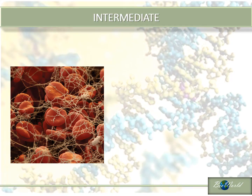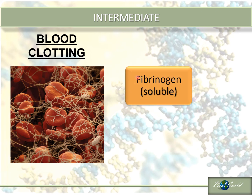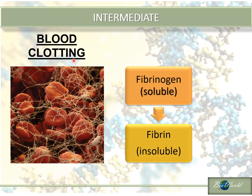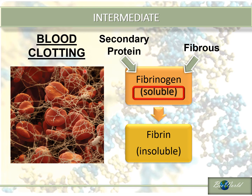The third group is intermediate proteins. Intermediate proteins can be found in the blood clotting process. It involves a protein called fibrinogen, which is originally soluble in our blood plasma. But during blood clotting, the fibrinogen converts into fibrin, which becomes insoluble and able to trap red blood cells, causing blood to clot. Fibrinogen is an intermediate protein because it is a secondary protein — and secondary proteins are fibrous proteins, which should be insoluble — yet fibrinogen is soluble in order to carry out the blood clotting process.